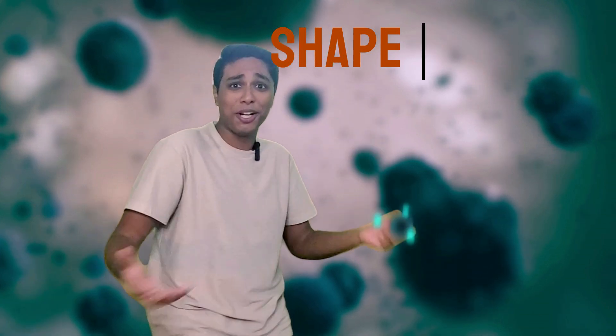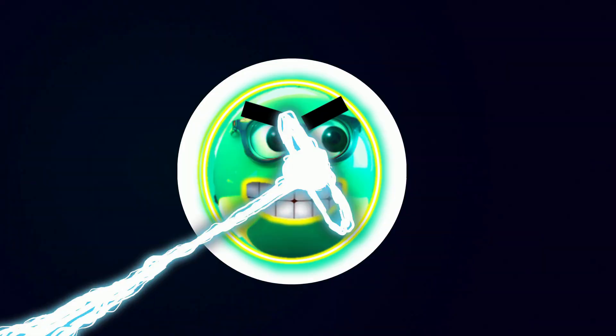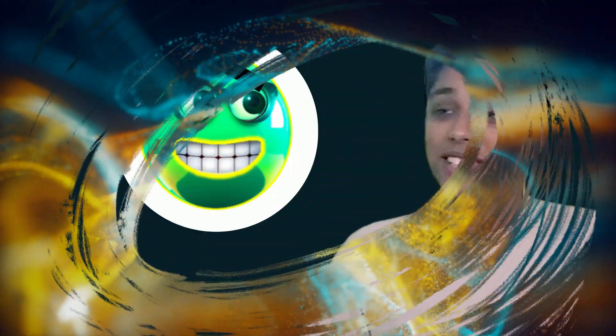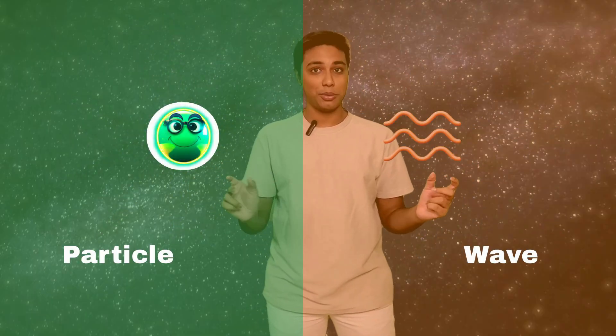For starters, these subatomic particles can shapeshift. Yeah, you heard me. When you're not around, they go wild and behave like waves. But when you look at one, it switches to the cute, innocent-looking particle state. But they can only exist in one state or the other, nothing in between.